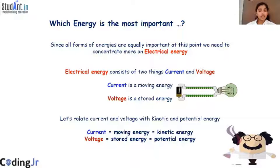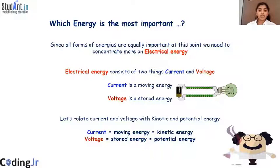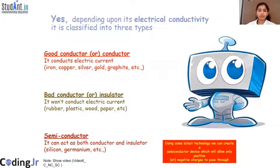Electrical energy consists of a few things: current and voltage. Current is a moving energy and voltage is a stored energy. We compare current with kinetic energy and voltage with potential energy.